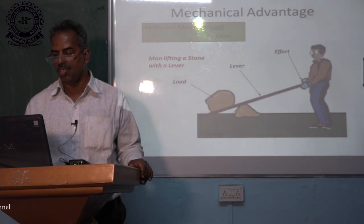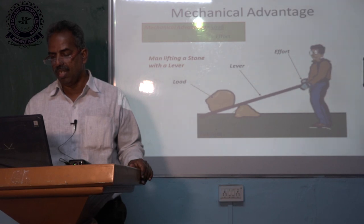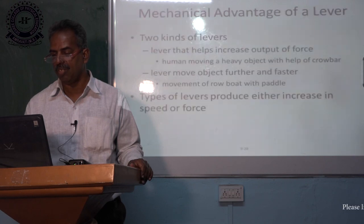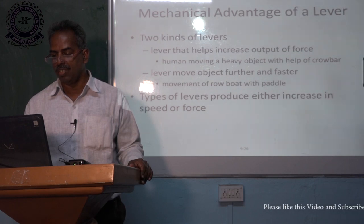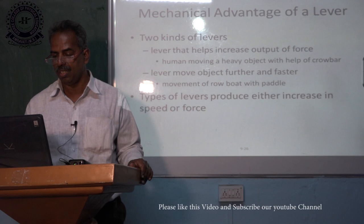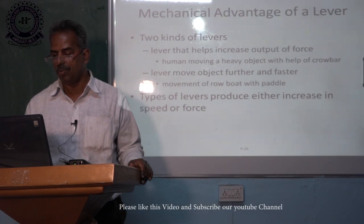The mechanical advantage is equal to load divided by effort. A man lifting a stone with a lever is shown — you can see how much effort he is applying and how much load there is. If less effort is applied, we can say that we have increased the force. Two kinds of levers regarding mechanical advantage: one is a lever that helps increase output of force, such as a human moving a heavy object with a crowbar; the other moves an object further and faster, such as the movement of a boat with a paddle.